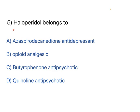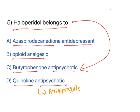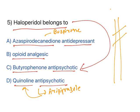Final combo example: 'Haloperidol belongs to which class?' Options show structures paired with class names. Haloperidol is a butyrophenone antipsychotic. Aripiprazole is a quinoline antipsychotic. Buspirone has an azaspirodecandione structure and acts as an anti-anxiety and antidepressant drug. To answer these questions, do not treat medicinal chemistry and pharmacology separately — read them in combination.